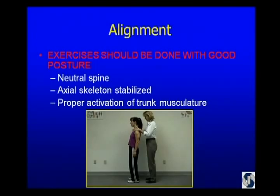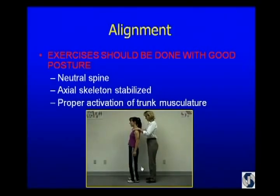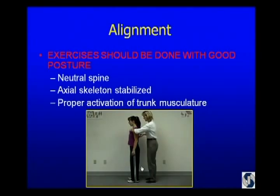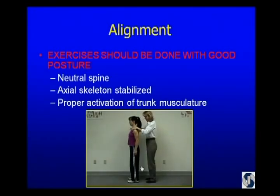When you look at alignment, we like patients to do their exercises standing as much as possible because it's more functional. But if you're going to do that, you've got to make sure alignment is correct — you want a neutral spine and the axial skeleton stabilized, so you get proper activation of the trunk musculature and your kinetic chain is intact. Here's how you test: there's too much lumbar sway here. Have the patient do a little pelvic tilt, line up properly, and now the force is transmitted properly. It's an easy way for your therapist to check alignment.